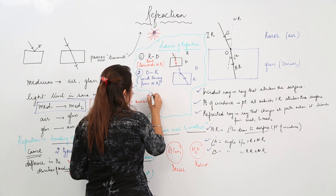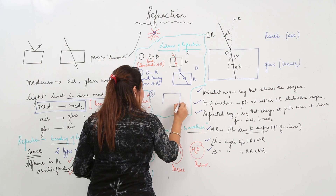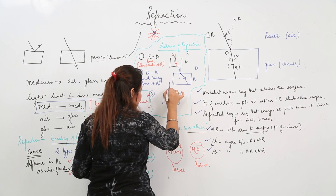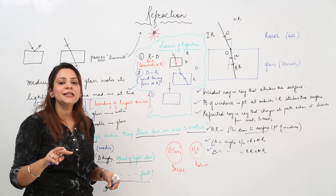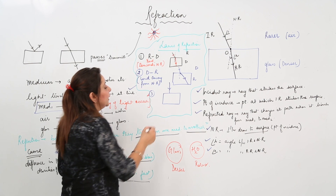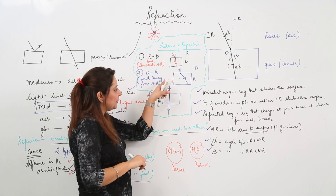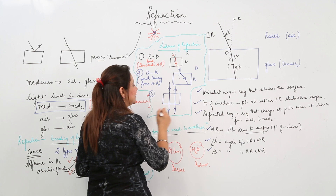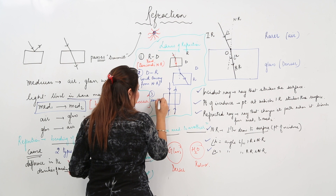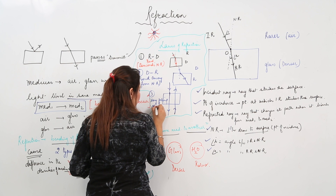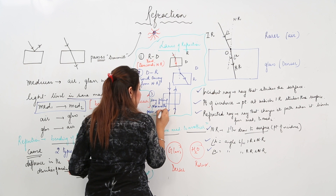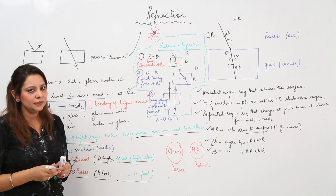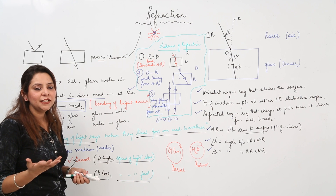The third rule: whenever light enters normally — meaning the incident ray coincides with the normal ray — it passes straight through without bending, whether going from top to bottom or bottom to top. A ray falling normally goes straight. In this case, both the angle of incidence and angle of refraction are zero.